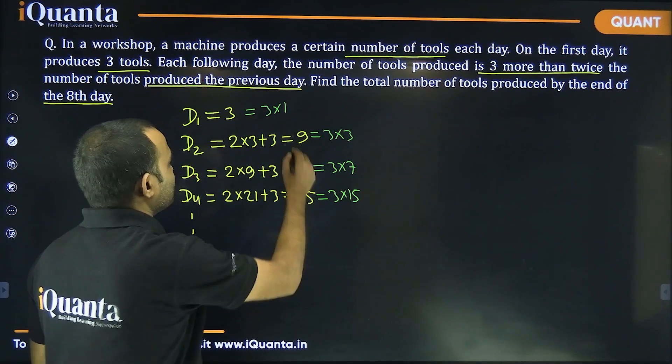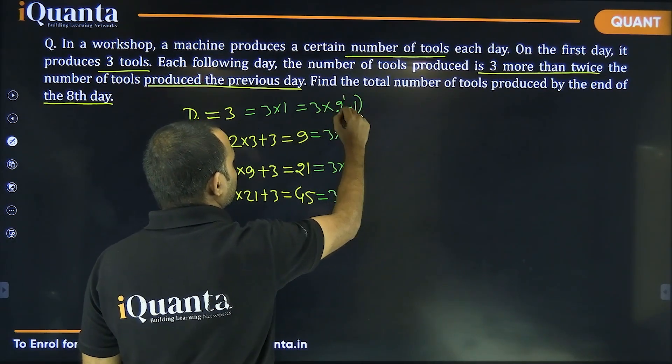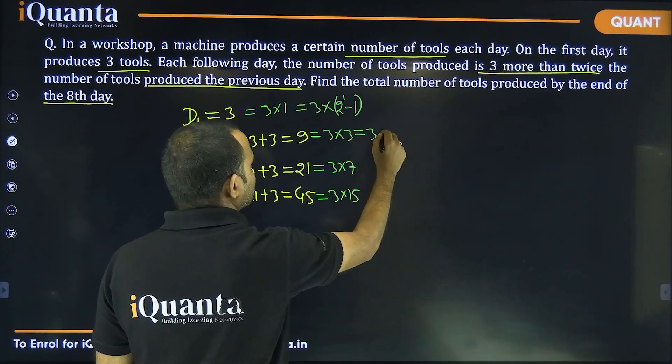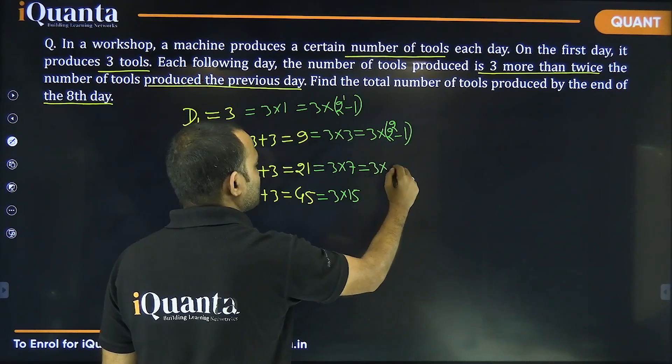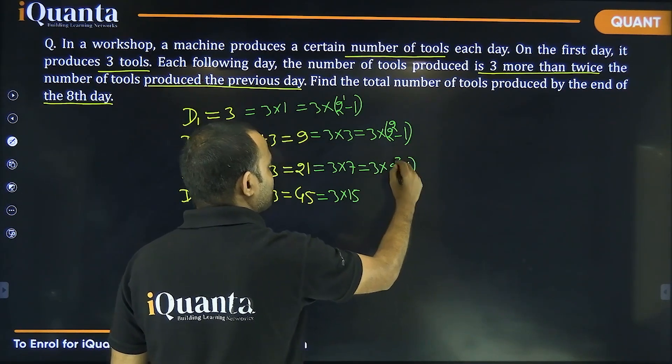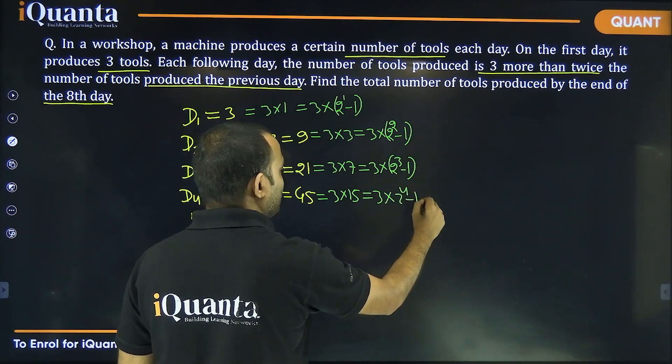So, this can be written as three into two to the power one minus one. This can be written as three into two to the power two minus one, four minus one. This can be written as three into two to the power three minus one, and this will be three into two to the power four minus one.